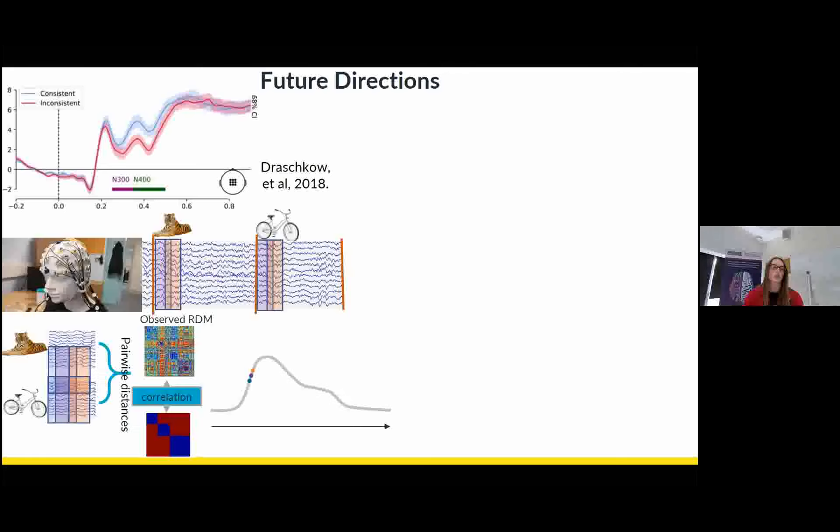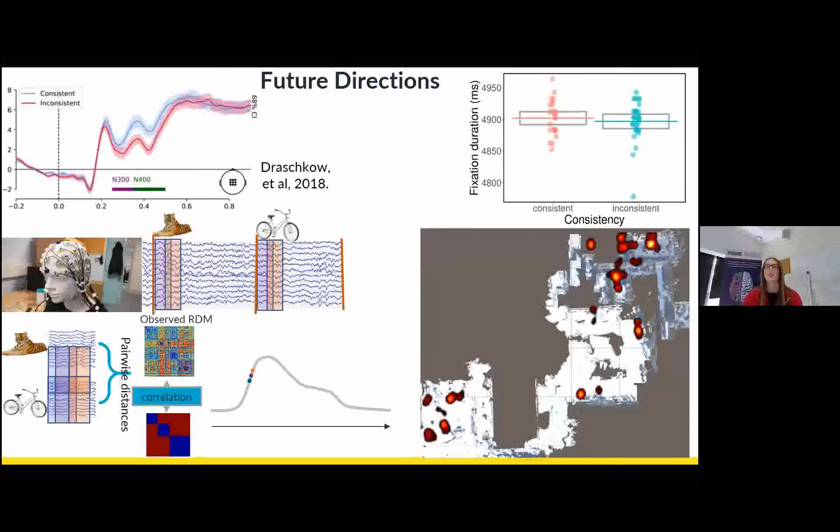And then we're also interested in when the visual and semantic features of the objects are represented in our EEG data. So we're going to use representational similarity analysis to take a look at that. And then we can also look at the eye tracking data. We can look at the fixation durations when participants are looking at objects and how that changes between conditions to get an idea of how long participants need to process the objects to recognize them.